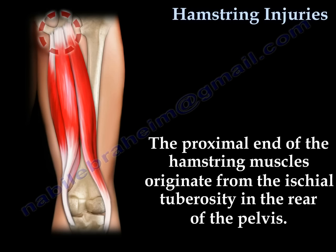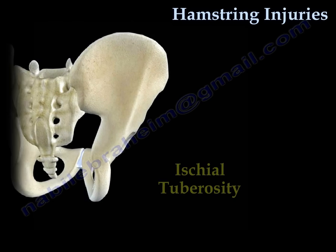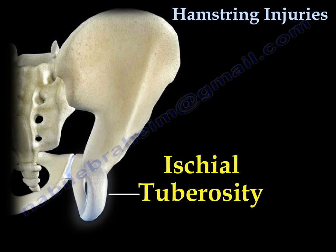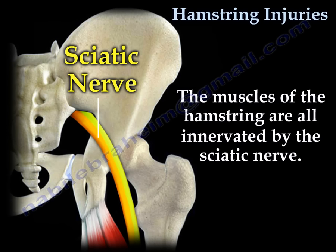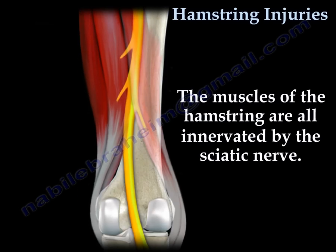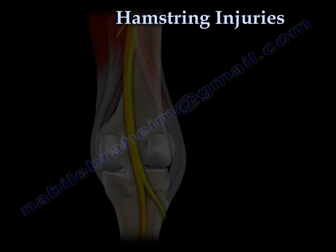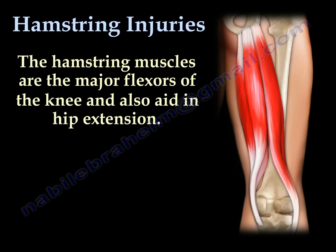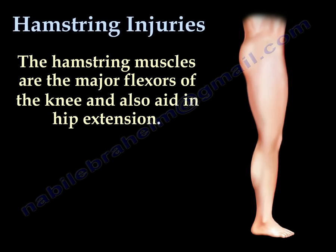The proximal end of the hamstring muscle originates from the ischial tuberosity of the pelvis. Here you can see the ischial tuberosity of the pelvis. The hamstrings come from the ischium of the pelvis and are close to the sciatic nerve, innervated by the sciatic nerve. The hamstring muscles are major flexors of the knee and help in hip extension.